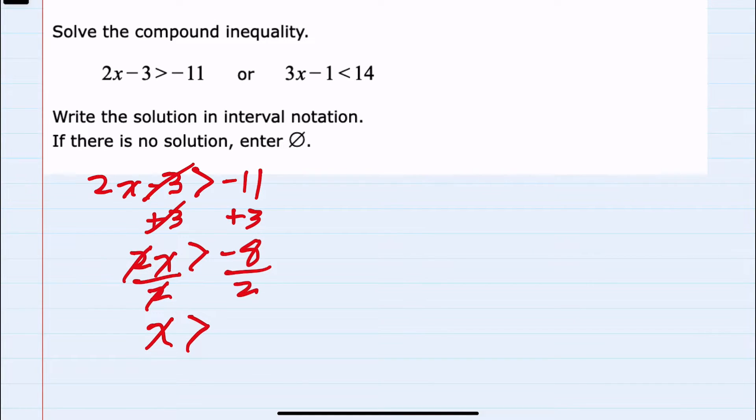So x is now isolated on the left. Negative 8 divided by 2 is negative 4. So we have simplified this first inequality.